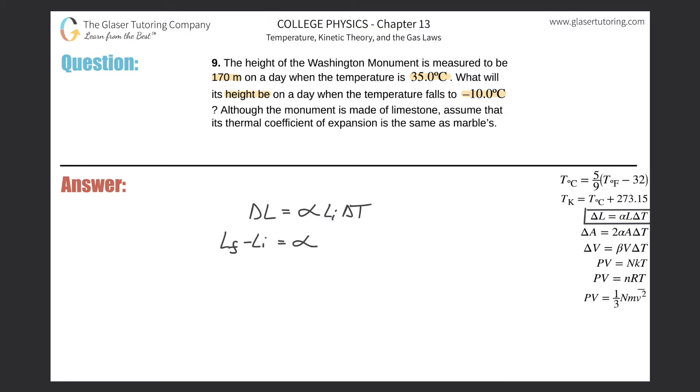And that should then be equal to alpha times L sub i times the change in temperature. And that will also be the final temperature minus the initial. So let me write T sub f minus T sub i. Alright, so now I'm after the final length.